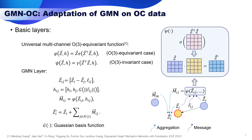Here we present GMN OC, which is our adaptation of graph mechanics networks (GMN) on the Open Catalyst data. In GMN ICLEAR 22, we propose a universal multi-channel O3 equivalent function. Considering the geometric information Z and non-geometric information H, our proposed form is specified as phi(Z, H) equals Z times sigma of the inner product of Z-transpose and Z, concatenated by H. Here sigma is an MLP. This formulation can universally approximate any O3 equivalent function with arbitrarily small error.